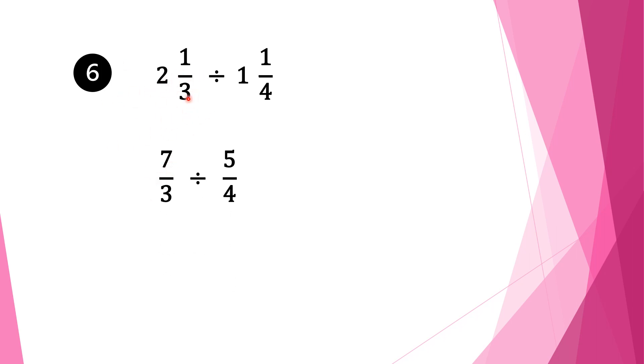Moving on to equation 6. We have 2 and 1 third divided by 1 and 1 quarter. Again with mixed fractions, we convert into normal fractions. So 3 times 2 is 6, plus 1 is 7, and we write down our denominator 3 as it is. We bring the division sign as it is. For the second fraction: 4 times 1 is 4, plus 1 is 5, and we bring our denominator 4 as it is. Now we have a normal fraction division.